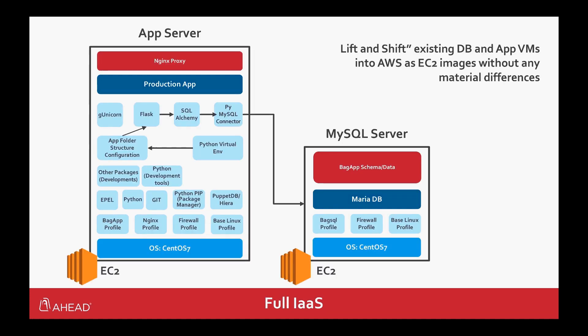The demo apps we're going to center around a single demonstration app we created for our fictitious Ahead aviation company called BagApp. BagApp is what you might expect from an airline company — it allows you to track your baggage as you travel around. This is a simple application using a Python Flask app server with a MySQL backend. It originated on-site with virtual machines managed by Chef. This represents the first iteration: we lifted and shifted into Amazon Web Services on EC2 images. There really aren't any changes — Chef still manages the configuration, the only difference is it's running in EC2 now.